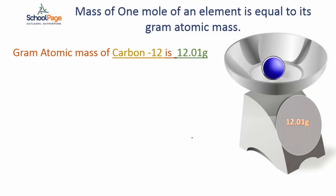Mass of one mole of an element is always equal to its gram atomic mass. Hence, one mole of carbon 12 is 12.01 grams.